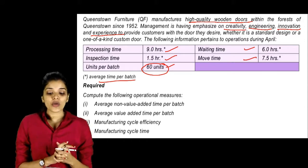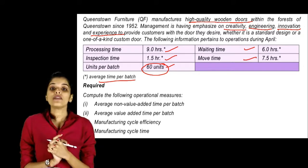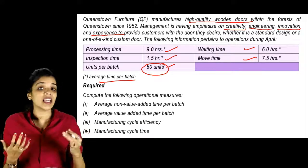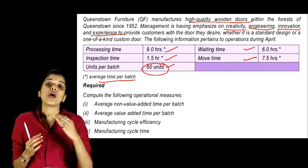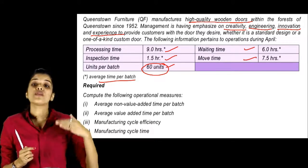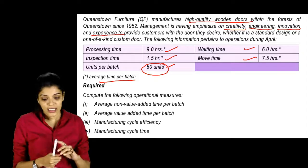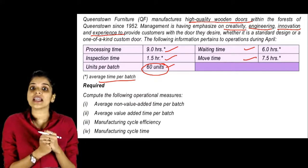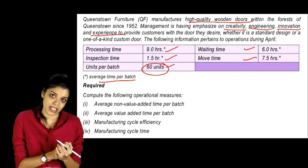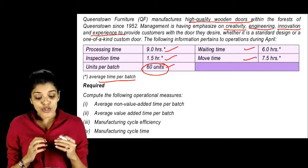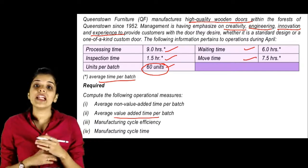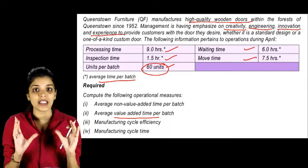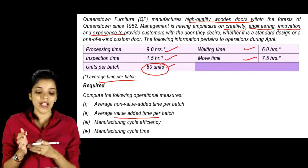First, average non-value added time per batch. Non-value added time means the time the customer doesn't want to pay for — time that could potentially be reduced or avoided. Second, average value added time per batch, which is the time the customer is willing to pay for.